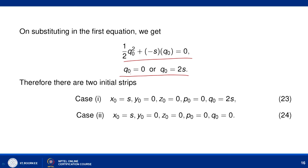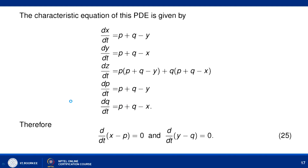We consider these as two different cases. In Case 1: x₀ = s, y₀ = 0, z₀ = 0, p₀ = 0, q₀ = 2s. In Case 2: x₀ = s, y₀ = 0, z₀ = 0, p₀ = 0, q₀ = 0. We will find the integral surface for each case. The characteristic equations of this PDE are derived next.